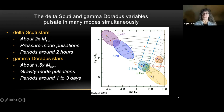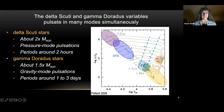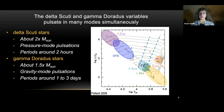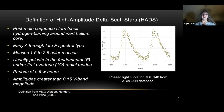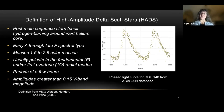The Delta Scuti and Gamma Doradus variable stars pulsate in many modes simultaneously. Delta Scuti stars are about twice the mass of the sun and pulsate in acoustic or sound-mode pulsations — we can't hear them because there's no air between us and the star, and the frequency would need to be bumped up about 20,000 times to be in our hearing range. Their periods are about two hours. High amplitude Delta Scuti stars are usually post-main sequence, having finished hydrogen burning in their core and starting toward becoming red giants, with an inert helium core and a hydrogen-burning shell. They have surface temperatures of about 6,000 to 8,000 degrees and masses of one and a half to two and a half solar masses.